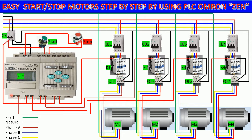Here is the output from the PLC Zen that we will connect the cable to the contactor one by one. This is a magnetic contactor, and this is an overload — when the motor draws over current, it will cut the control circuit.